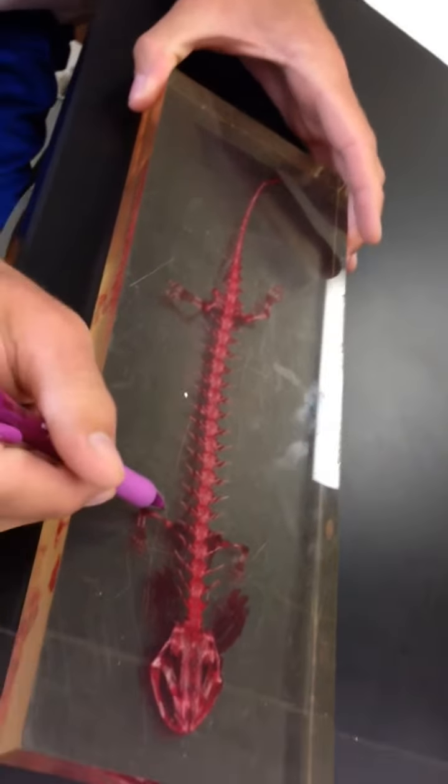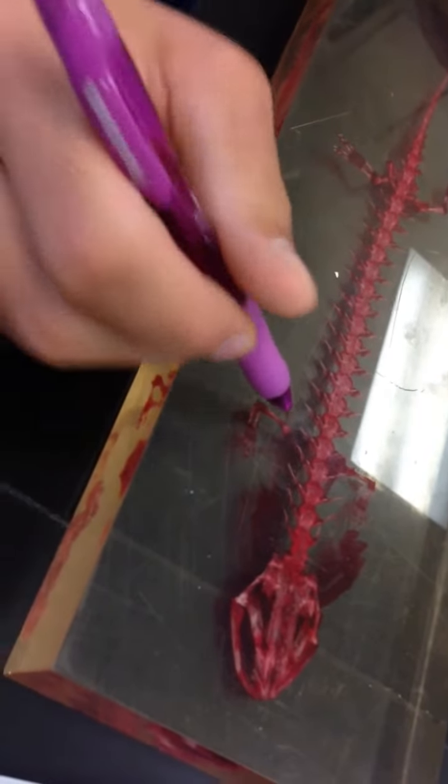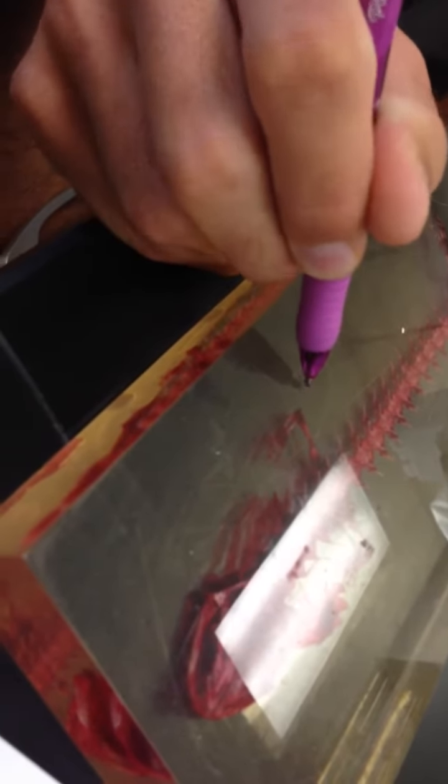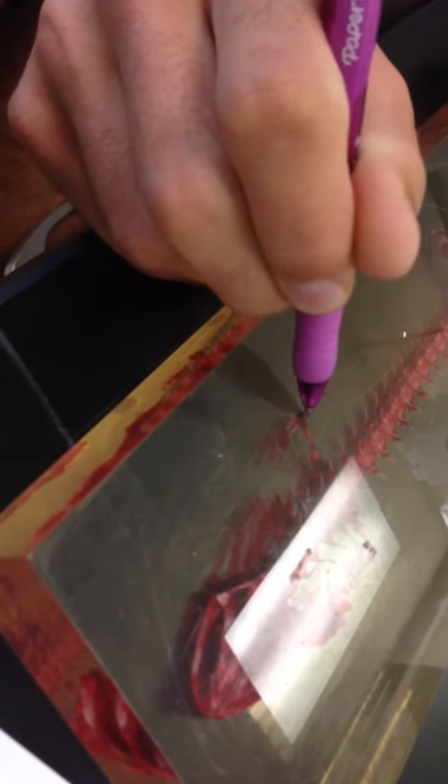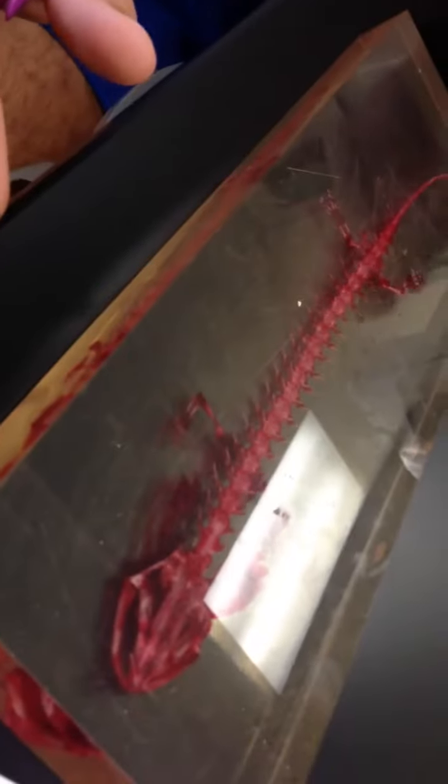Coming up to the forelimbs, we have the humerus, just like in humans, the ulna on the inside, and the radius to the outside, with carpals, metacarpals, and phalanges, making up the nectaris' hand.